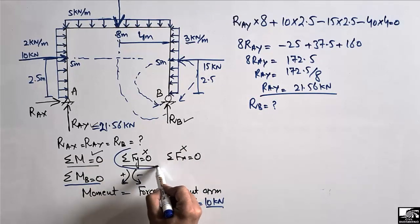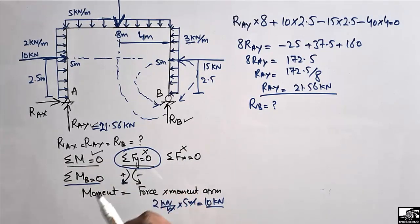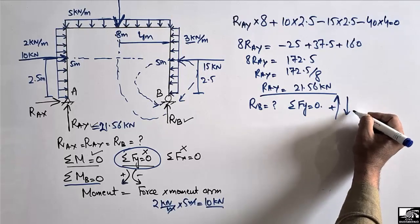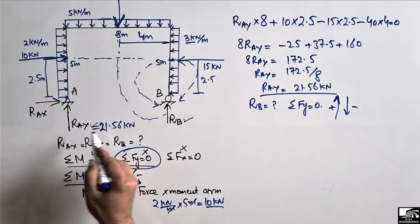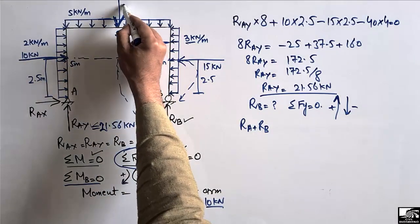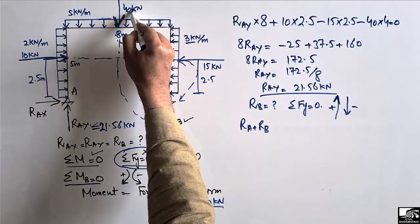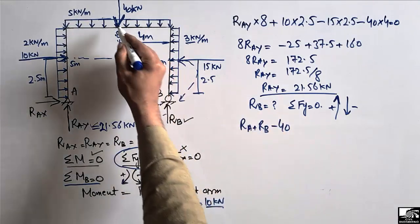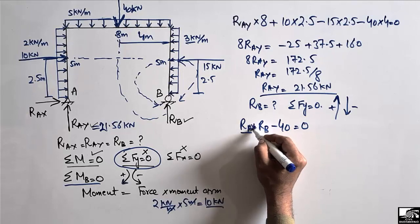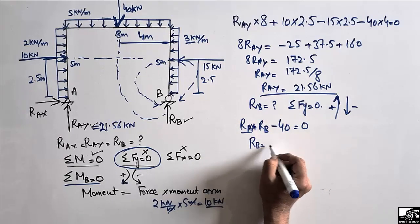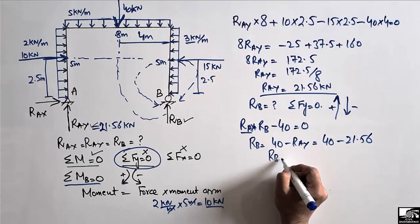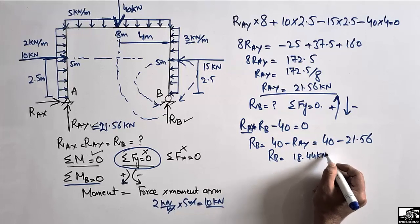To find RB, we now use the vertical equilibrium equation since there is only one unknown remaining. Taking upward forces as positive: RAY + RB − 40 = 0. Since RAY = 21.56 kN, RB = 40 − 21.56 = 18.44 kN. So the vertical reaction at support B is 18.44 kN.